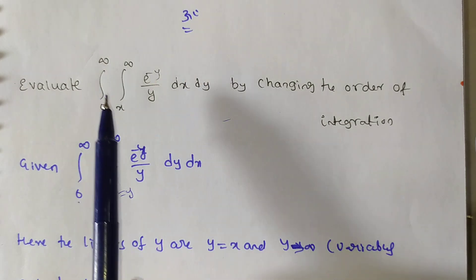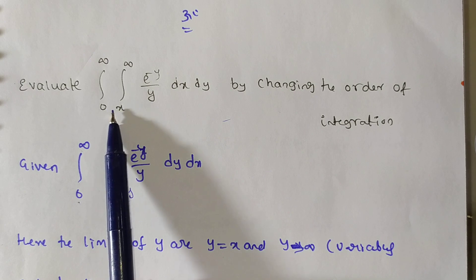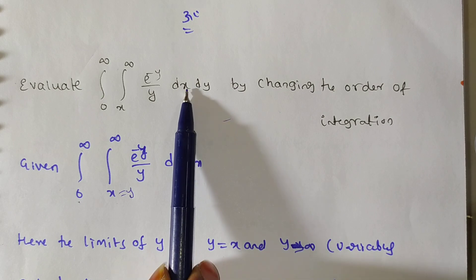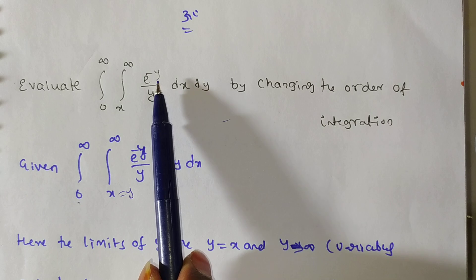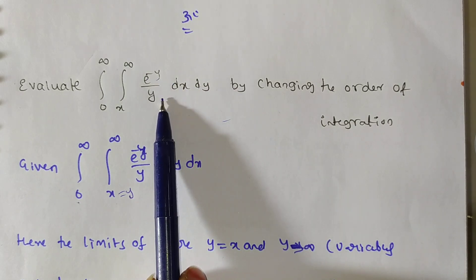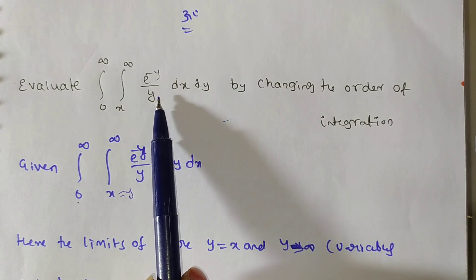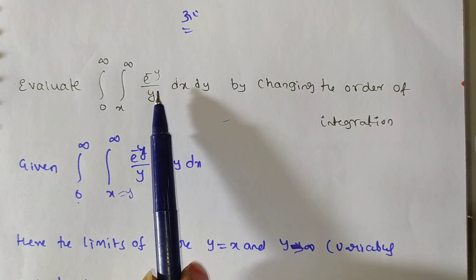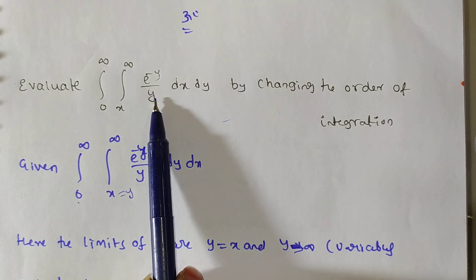Here, the limits are from 0 to infinity and x is from x to infinity. The dependent variable is y, which depends on x. So we have to integrate with respect to y first. But the integrand is of the form u/v — you cannot apply the u/v rule here, and there is no f-dash of x by f of x form, so we cannot get the integration directly for the integrand.